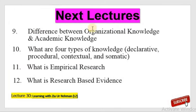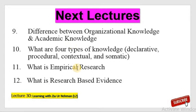The next lectures are about the difference between organizational knowledge and academic knowledge, what are the four types of knowledge — declarative, procedural, contextual, and somatic — and what is empirical research and research-based evidence. These are lectures which are very important for scholars. You are requested to please listen to all these lectures, which I am hopeful will increase your basic understanding about knowledge creation and how knowledge is important for research at MS, MPhil, or PhD level. These lectures will provide you a basic understanding about empirical research and research-based evidence.